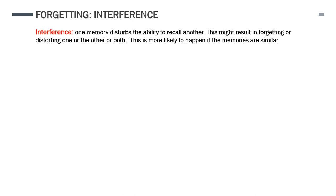Interference: general definition — one memory disturbs the ability to recall another. It might result in forgetting or distorting another memory, or both, and it is more likely to happen if these memories are very similar. That is your general definition for what interference means.